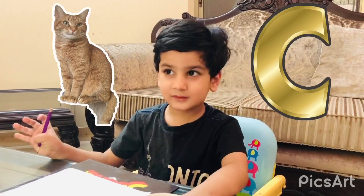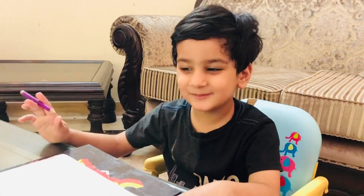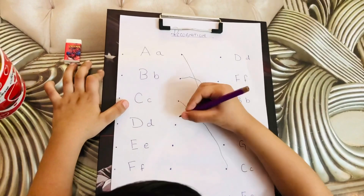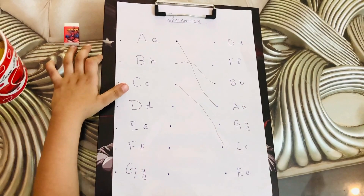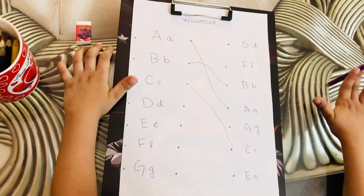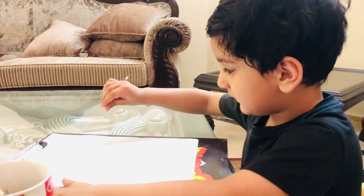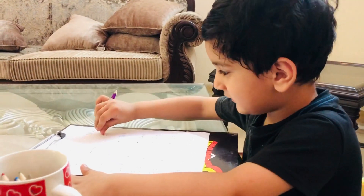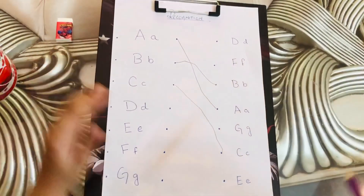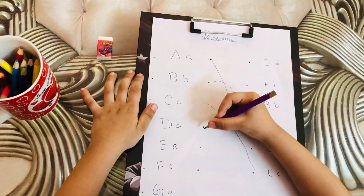C is for cat. Do you know what a cat sounds like? Meow, meow, meow! Now find — yes! Join them, dot to dot.